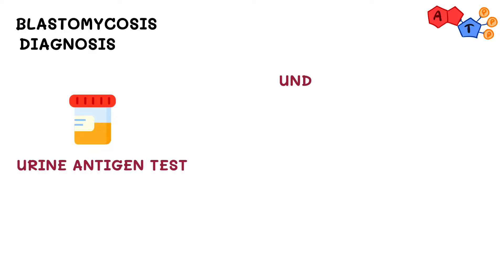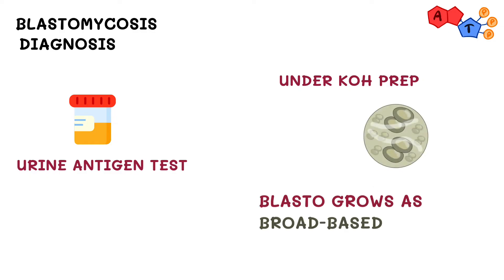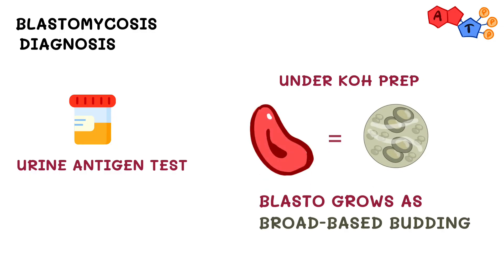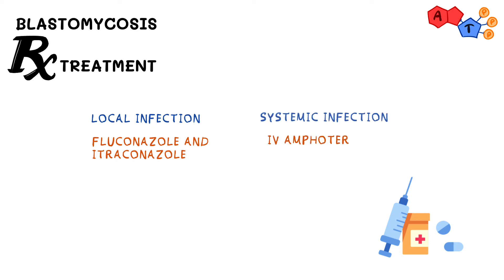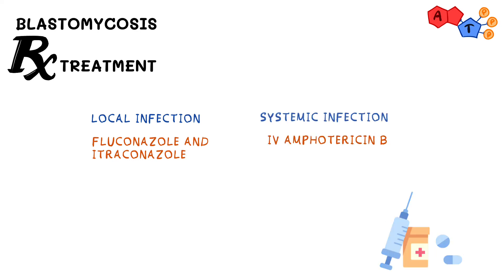Just like histoplasmosis, blastomycosis can be detected via urine antigen test. Under potassium hydroxide prep, the yeast form grows as broad-based budding and is the same size as RBCs. For local infection, we treat with fluconazole and itraconazole; for systemic infections we give IV amphotericin B.